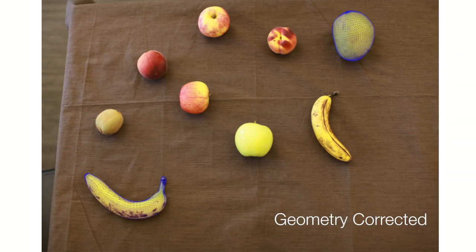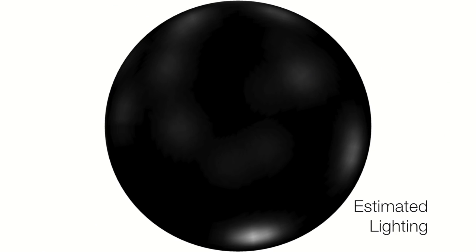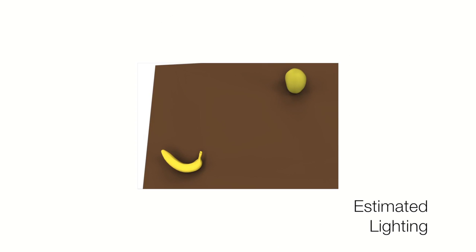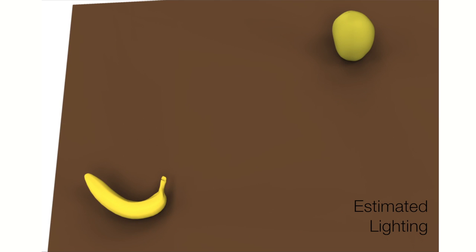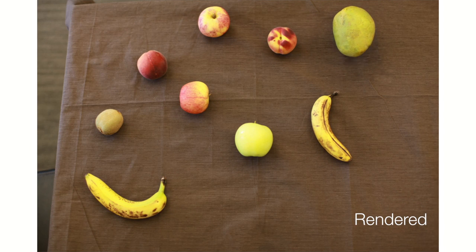We estimate an illumination model from the visible pixels and the geometry of the object using a von Mises Fischer basis with smoothness and sparsity priors. We can now produce shadows and illumination changes on the object as it moves.